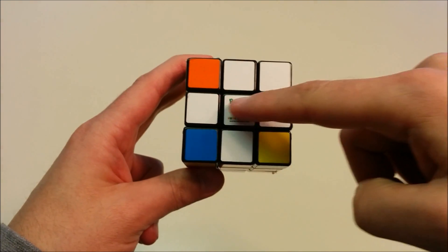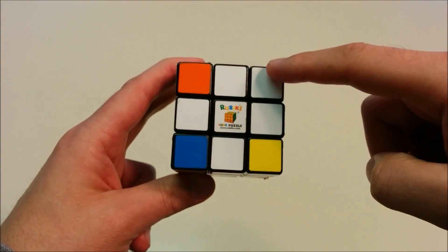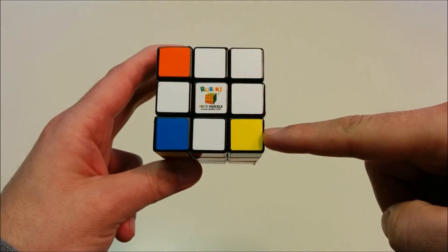Alright, we've completed the white cross, and now we need to complete the four corners and put them in the correct position and correct orientation.